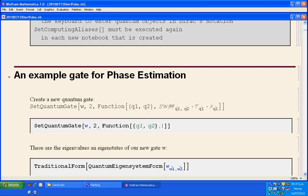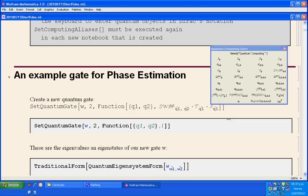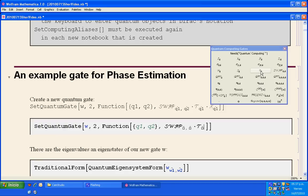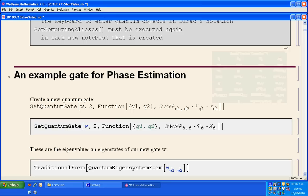In order to enter those gates, I'm going to use the palette or toolbar Quantum Computing gates. Here I select swap, then center dot, then T gate, then center dot, and finally X gate.